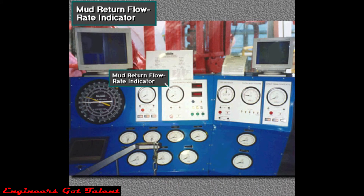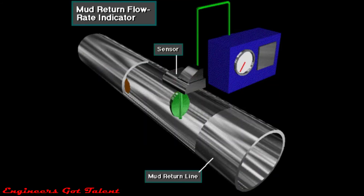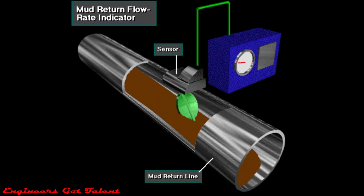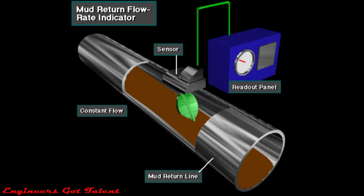Drillers use the mud return flow rate gauge as a relative indicator of how much drilling fluid is returning at the flow line. The sensor is mounted in the mud return line, the flow line. A paddle inside the return line moves as mud flows past it, sending a signal to a readout panel on the driller's control console. The driller sets the readout so that as long as return flow is normal with constant pump speed and output, no alarm sounds or lights up. However, when the return flow rate changes — increases or decreases — the paddle's motion also changes, sending a signal to the driller's readout and sounding or illuminating an alarm.